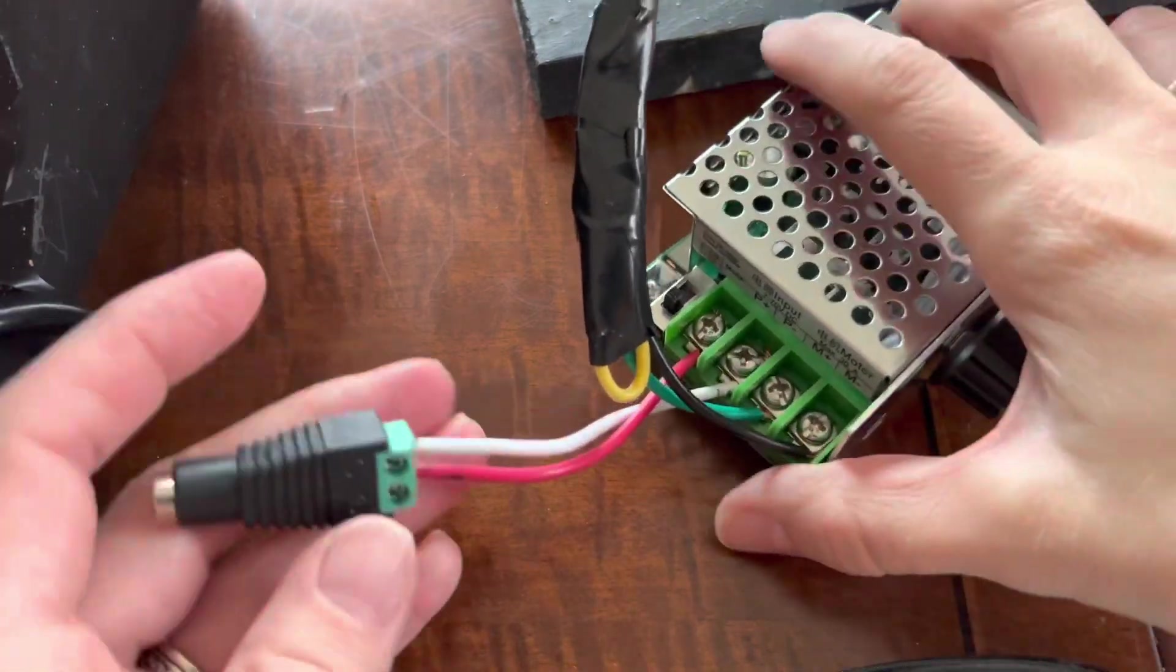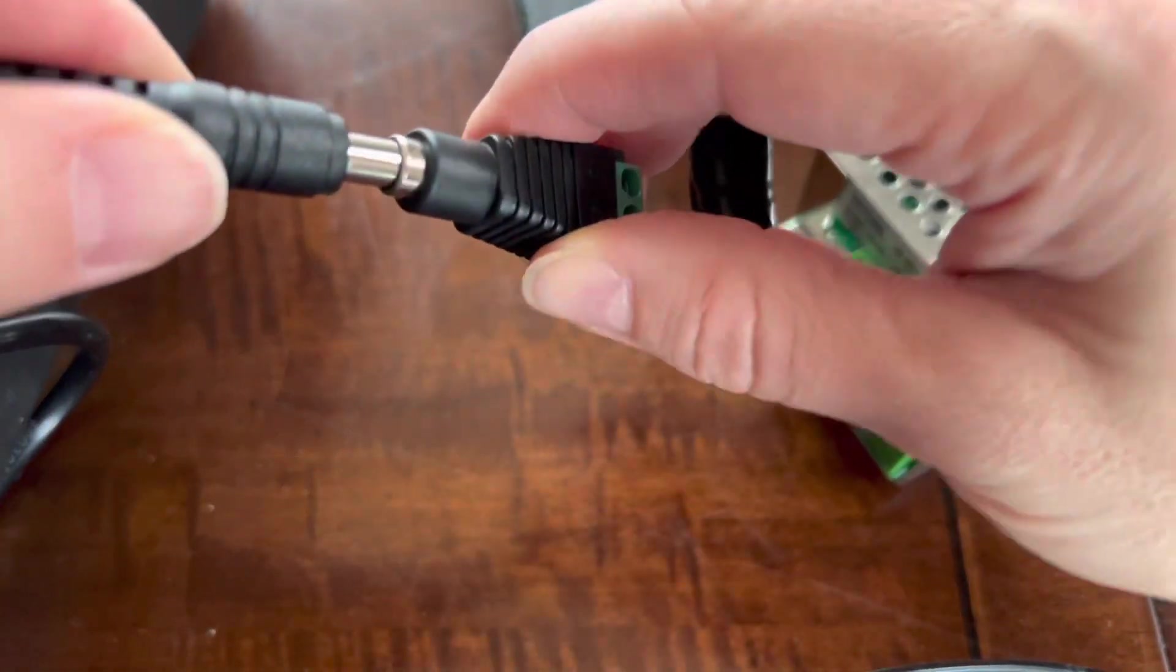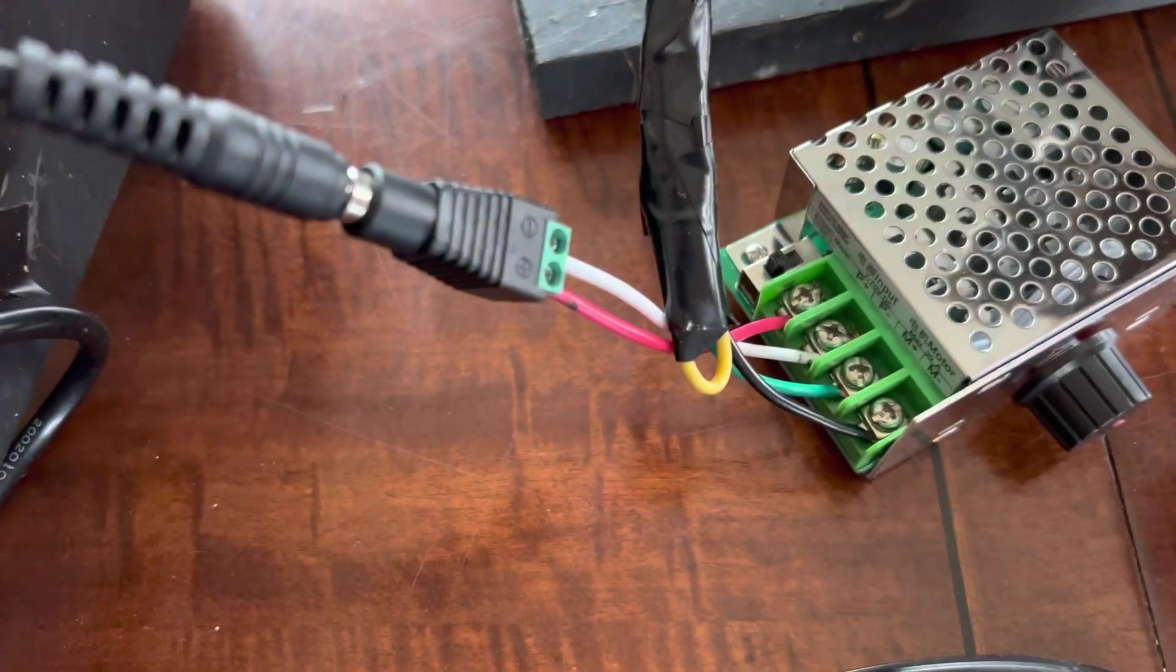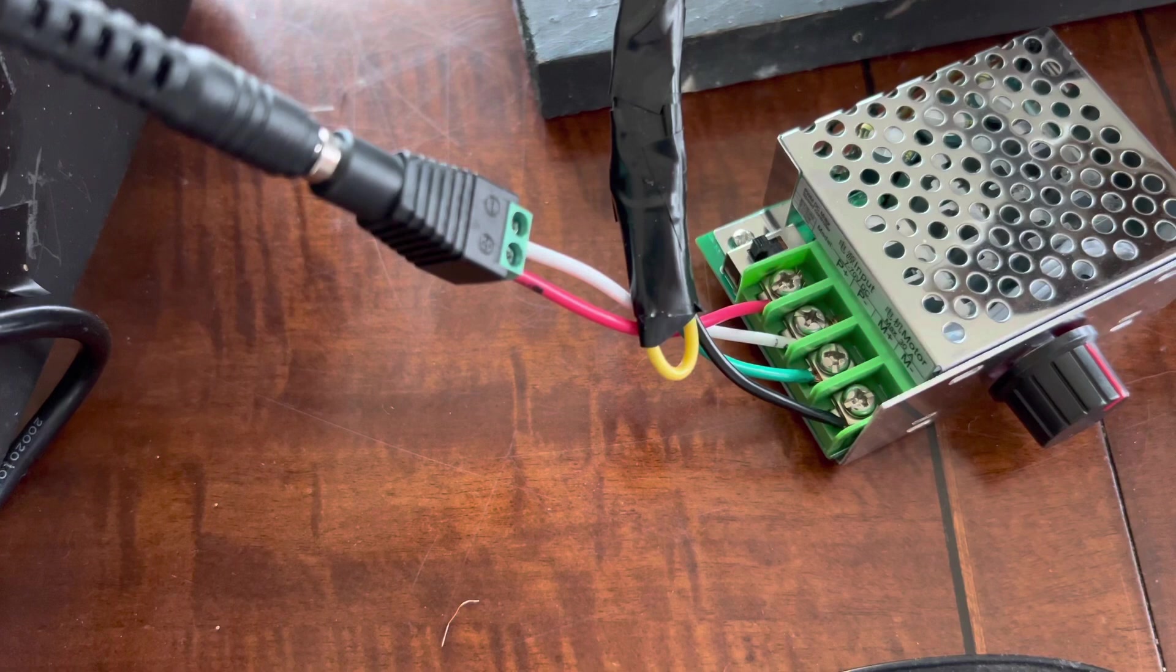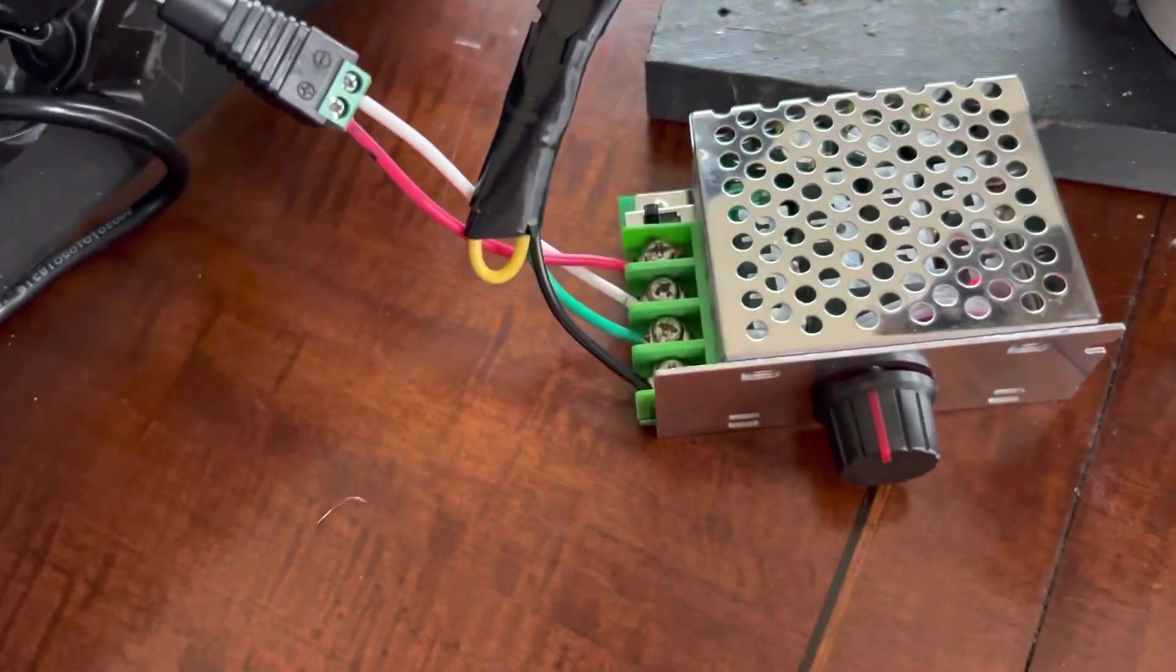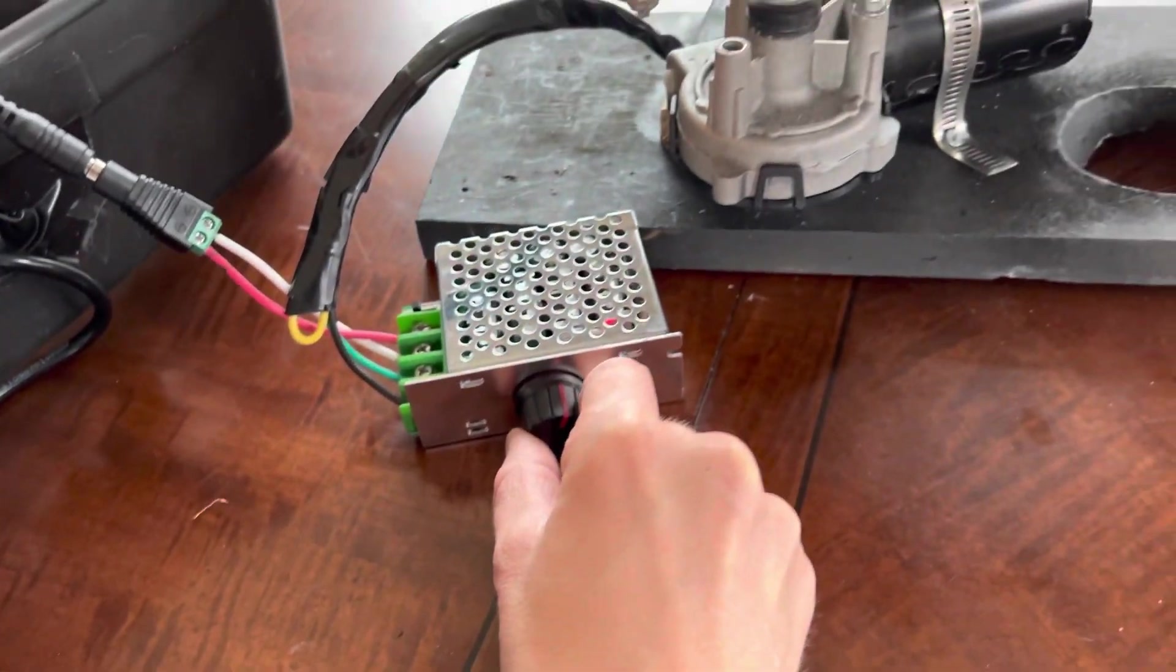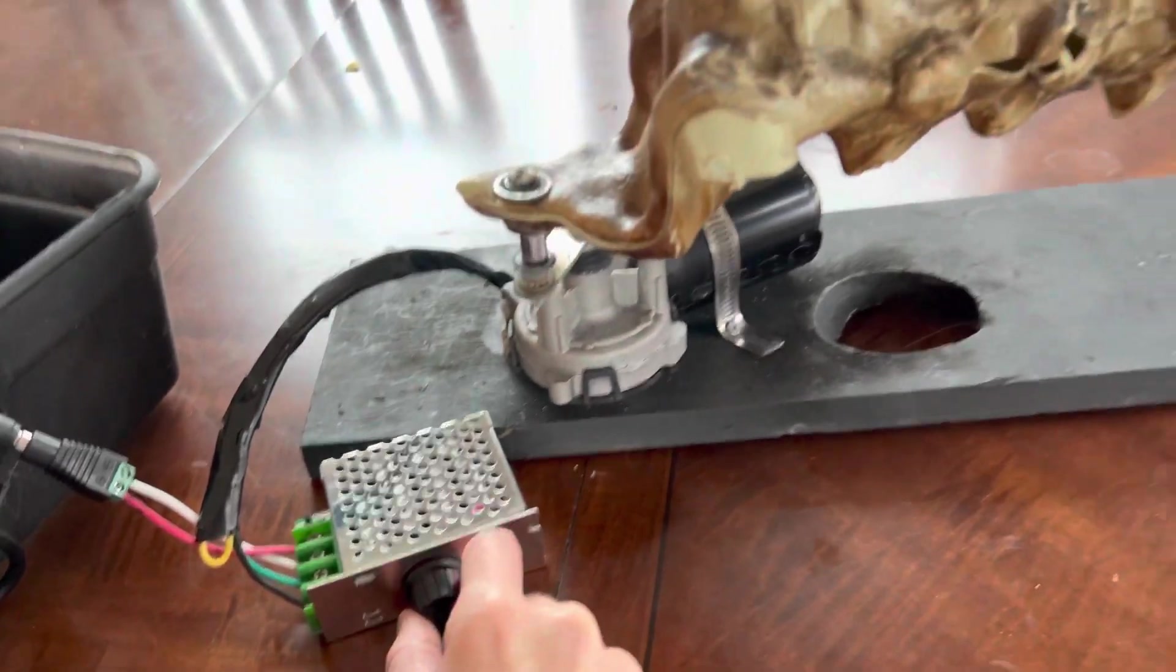Now all we need to do is plug it in to our power supply and plug it into our wall. So just make sure that it's flipped on. There's a little toggle switch there, and then you can turn the knob and control the speed. Look at that.